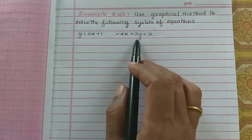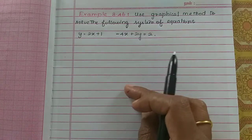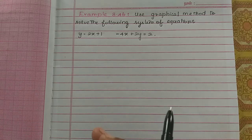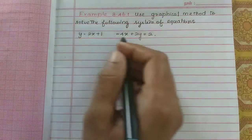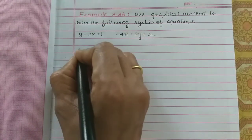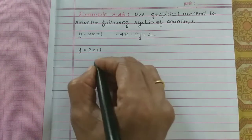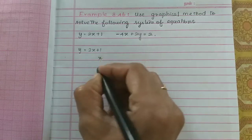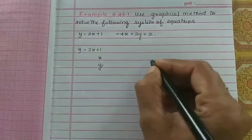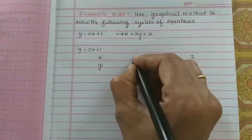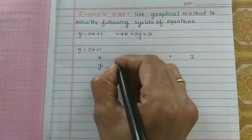So in the two equations we will substitute x values. We will see how many solutions the two lines will meet. In the first equation, y equals 2x plus 1. We will fix x values and plot 5 points to get the graph.